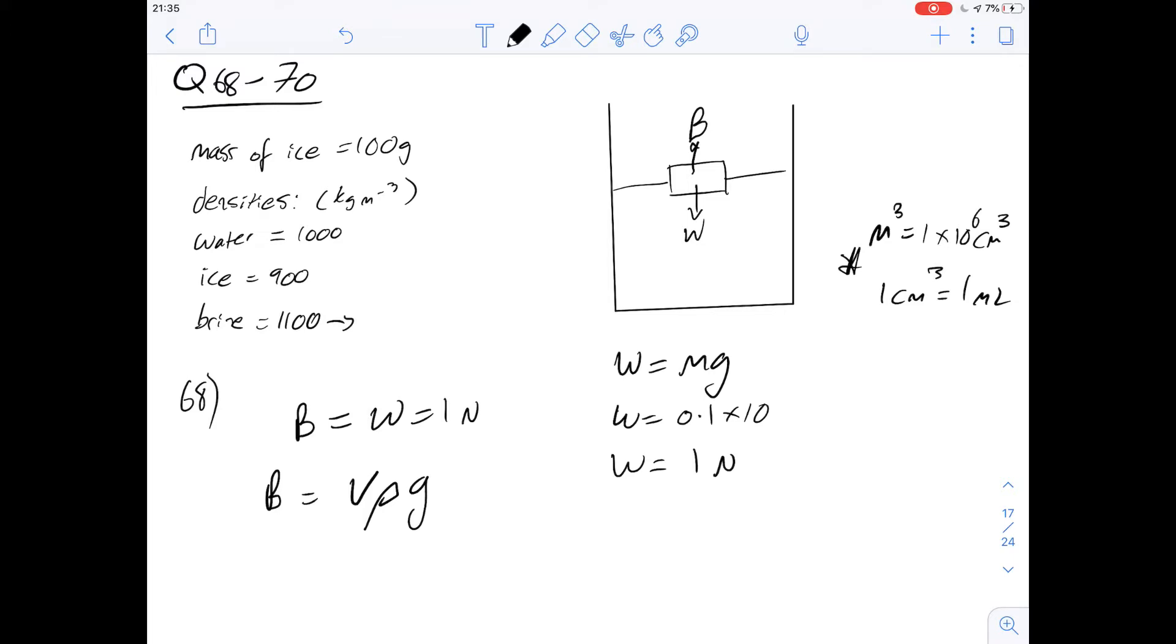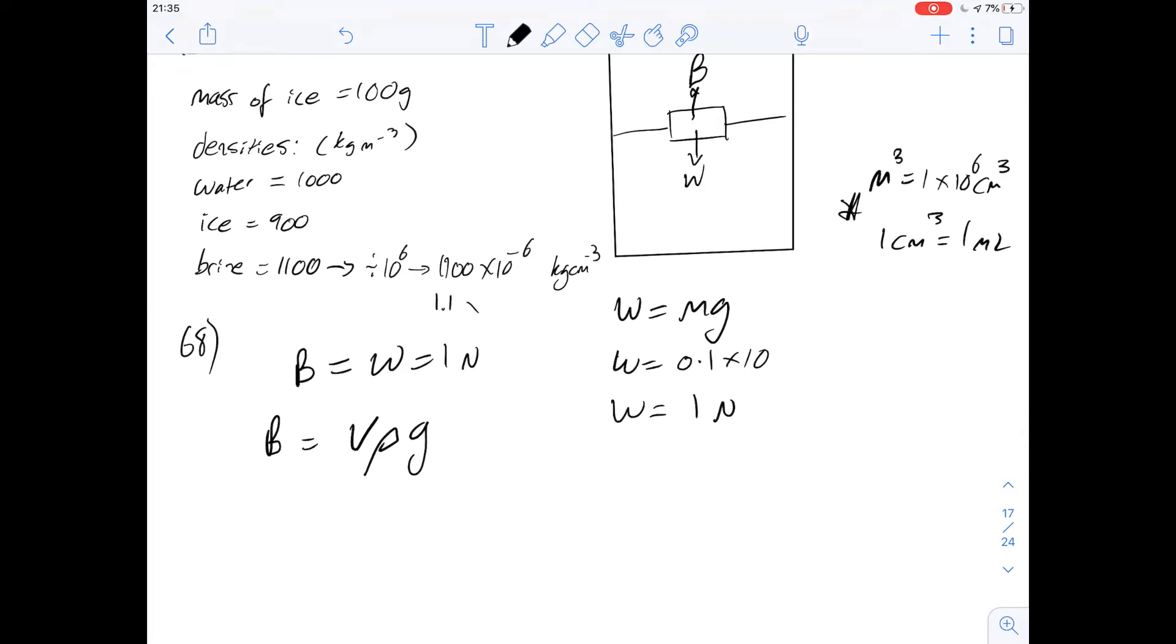So to convert the brine into kilograms per centimeters cubed, because we're going to be dealing in centimeters cubed and eventually milliliters, we can divide 1100 by 10 to the 6. So we end up with 1100 times 10 to the minus 6. And the units for this are going to be kilograms per centimeter cubed. Great. Well, now that we've done that, we can simplify that to 1.1 times 10 to the minus 3. Again, the same units here.